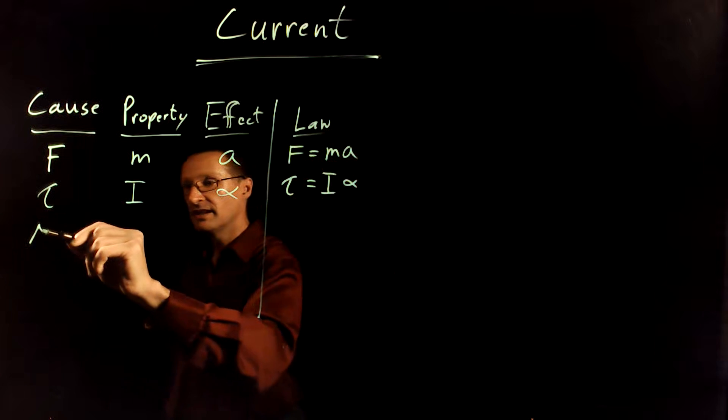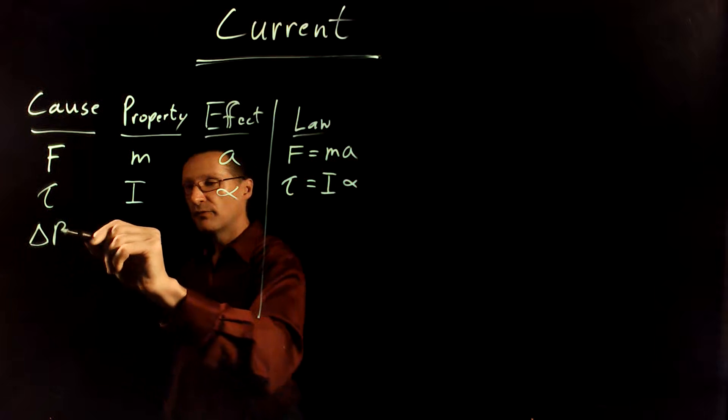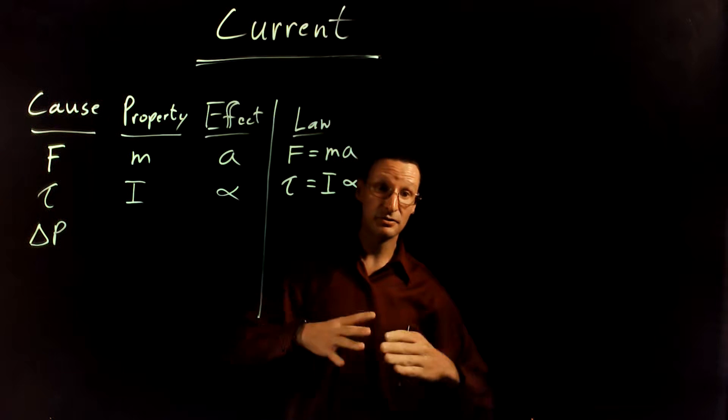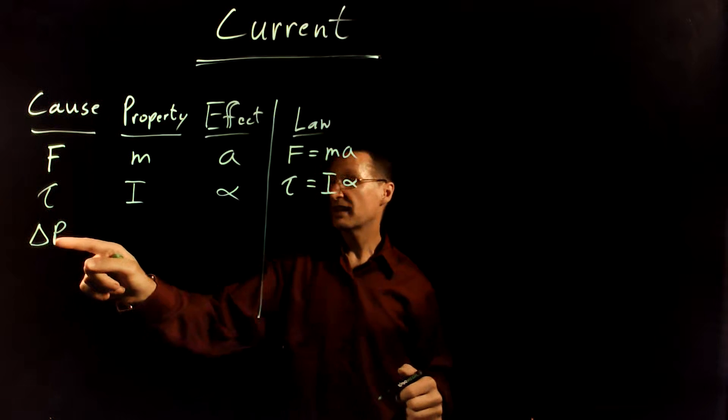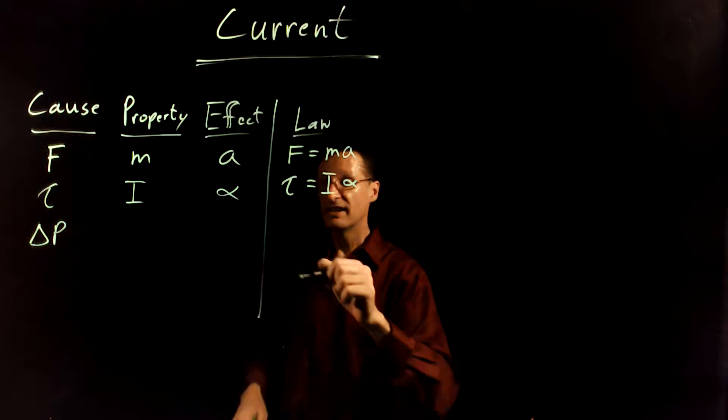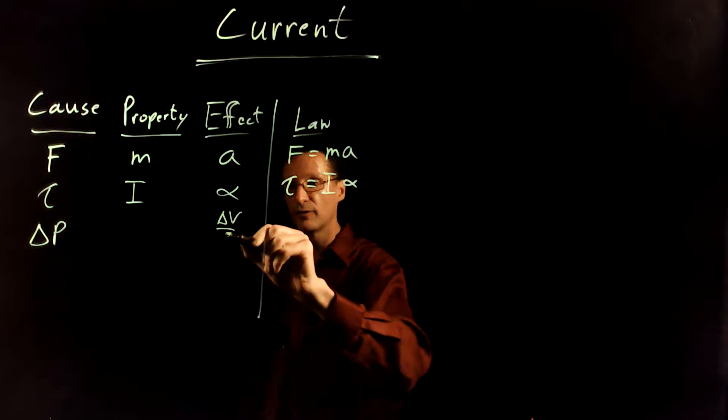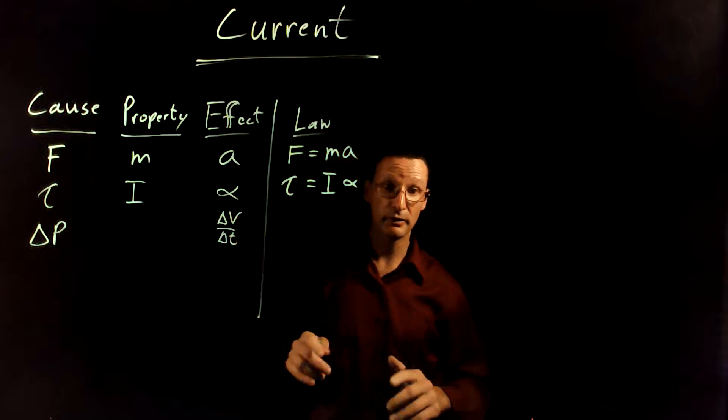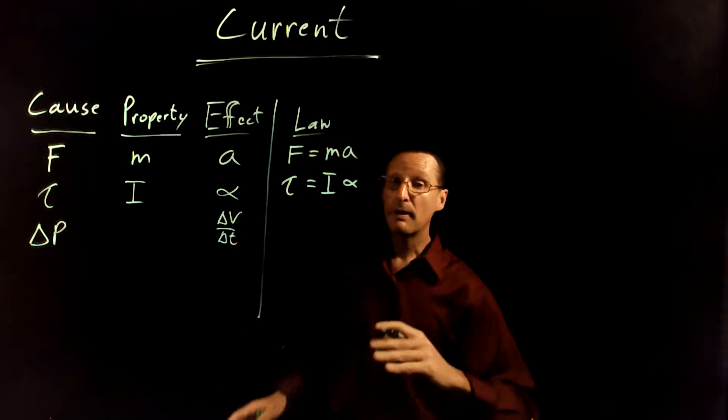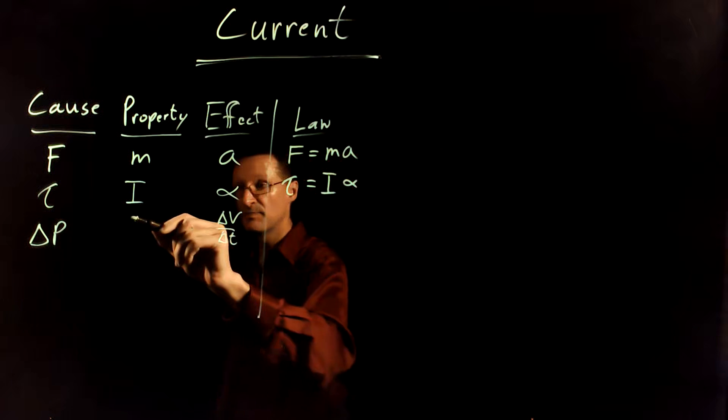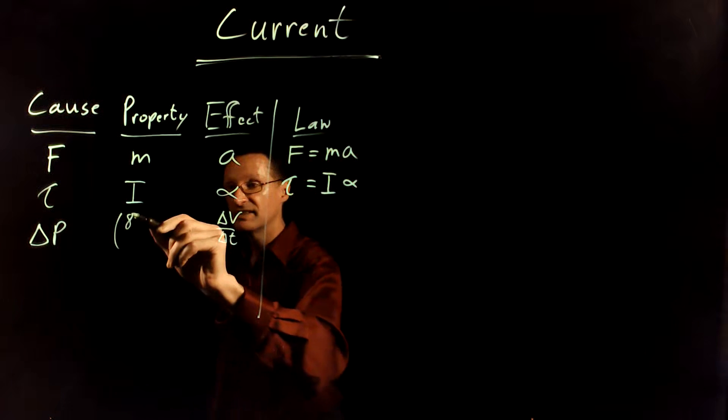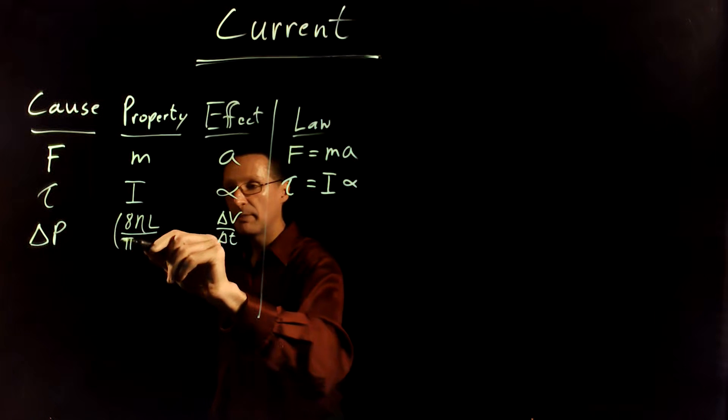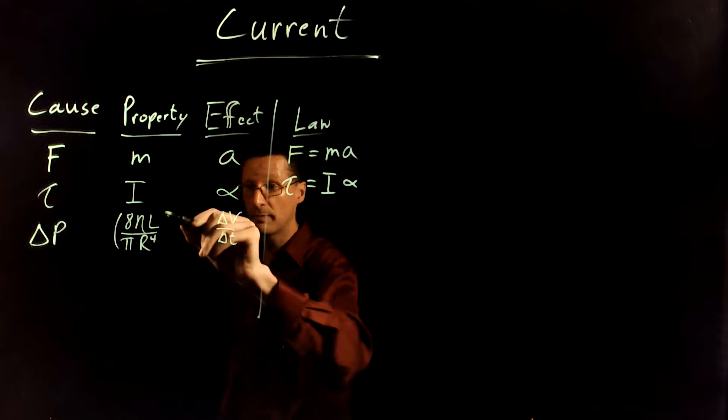You may have seen the fluid flow Poiseuille's equation, which says that pressure differences drive fluid flow. The pressure difference is the cause and the effect is fluid flow—this is the volume flow rate, the amount of volume of liquid, the number of liters per second flowing through a pipe. The pipe has its own property of resistance: 8 eta, which is the viscosity, times the length of the pipe divided by pi times the radius of the pipe to the fourth power.